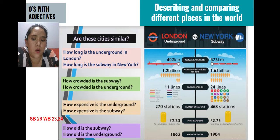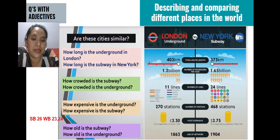And finally, how old is the subject? The subway is from 1904, while the Underground is from 1863. It means that the oldest network is the London Underground.